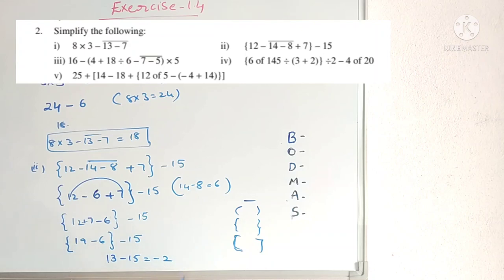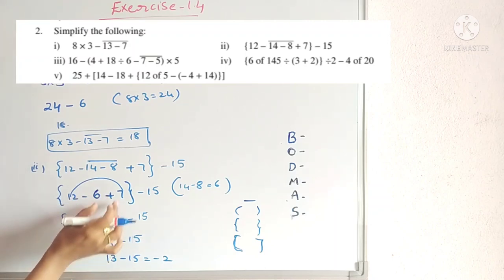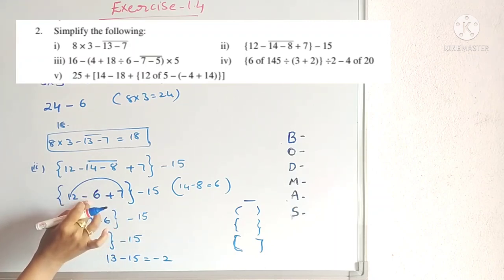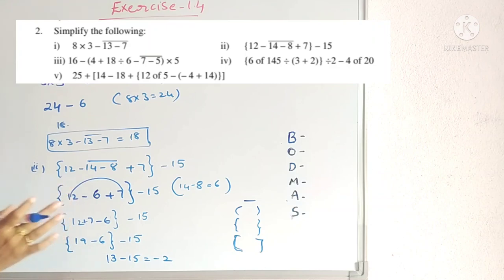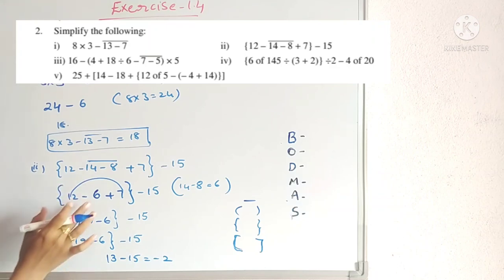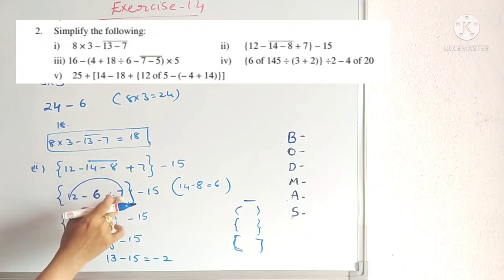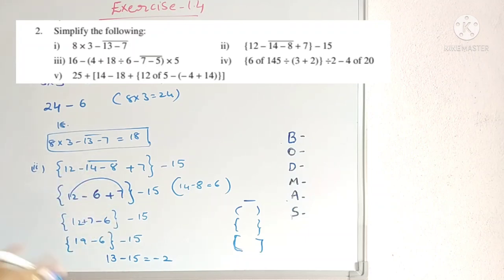Students will generally get confused here. The positive numbers are 12 and 7, so we add those first: 12 + 7 = 19. Then subtract 6 and 15: 19 − 6 = 13, then 13 − 15 = −2. So the answer is −2.